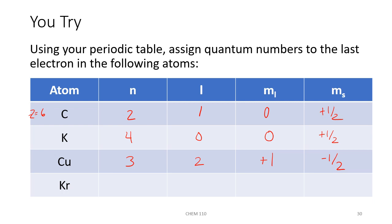For krypton, which is in the p block in period 4: l = 1, n = 4. The m_l pattern cycles −1, 0, +1 and noble gases fall at m_l = +1. Since krypton is in the second set of three columns, m_s = −½. Practice using your periodic table — you can pick any atom and assign four quantum numbers to the last electron for that atom.